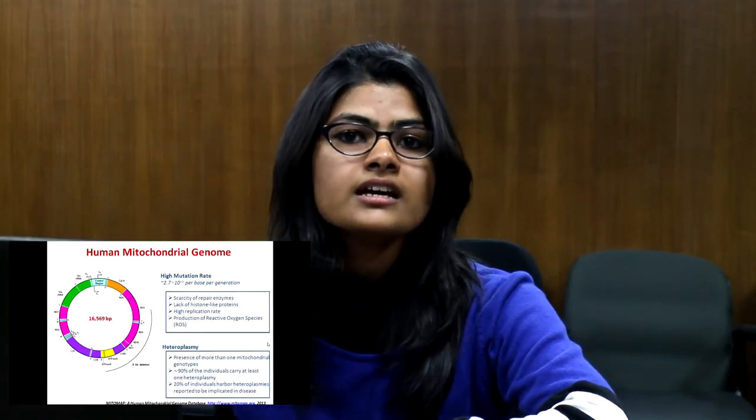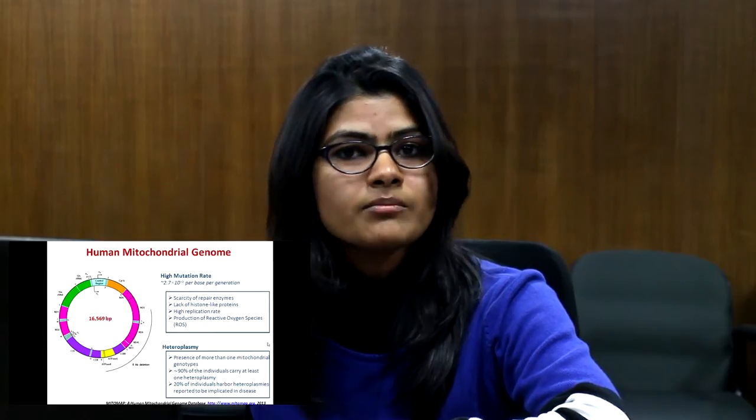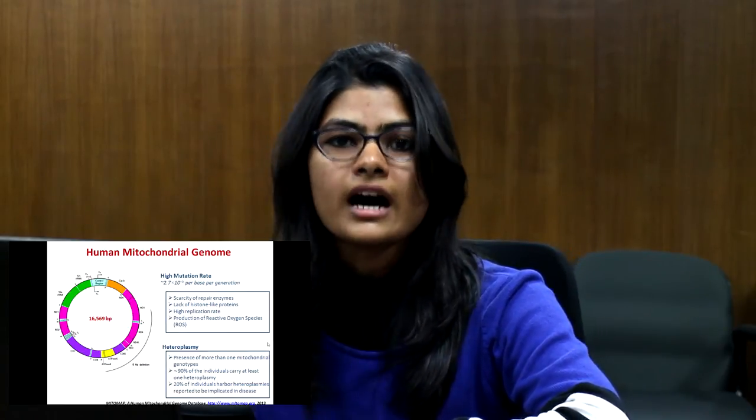The 16,569 bases of the mitochondrial genome encode for 37 genes, out of which 13 are protein coding, 22 are transfer RNAs, and 2 are ribosomal RNAs. These encounter a high mutation rate of around 2.7 × 10⁻⁵ per base per generation, which is around 1,000-fold higher than the nuclear counterpart. This may be due to the scarcity of repair enzymes, lack of histone-like proteins, high replication rate, and production of reactive oxygen species.